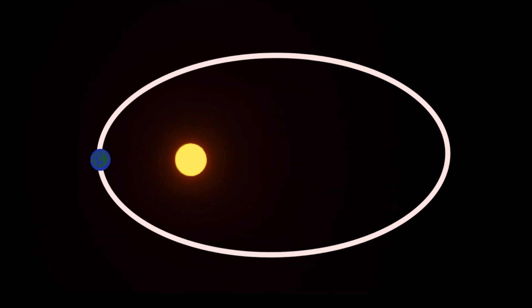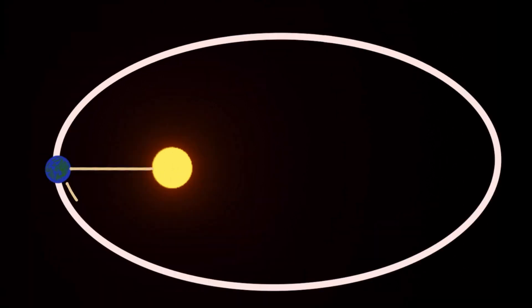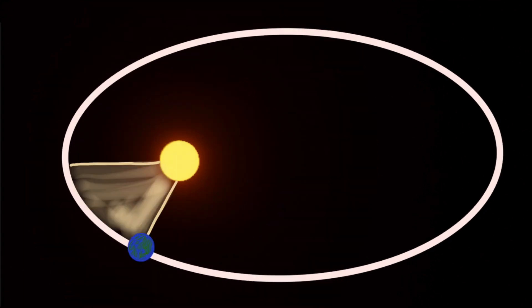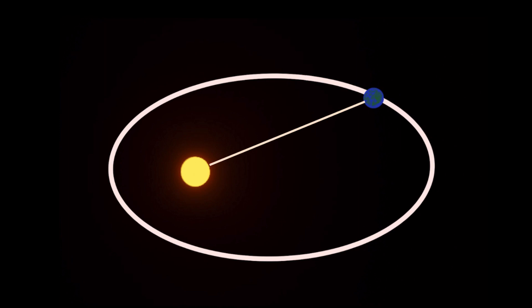For Kepler's second law of planetary motion, let's imagine a line connecting the Sun to an orbiting planet. This line sweeps through a certain area during a certain span of time. Now let's imagine the same planet at a different point in its orbit. As long as the span of time is the same as before, the area covered by the planet will be the same.